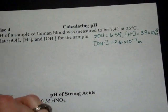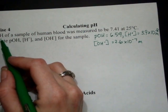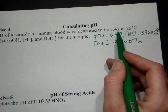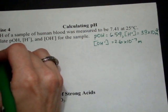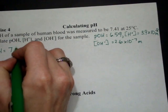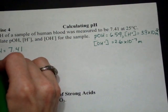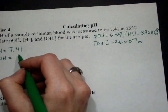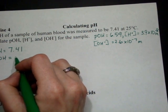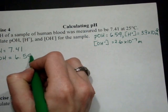All right, so we have pH of the sample of human blood, 7.41. To get pOH, I'm just going to subtract from 14. 14 minus 7.41 gives me 6.59.